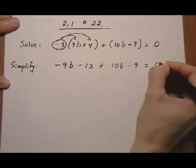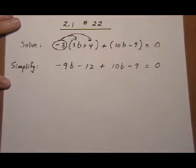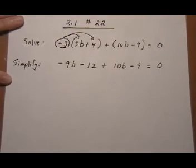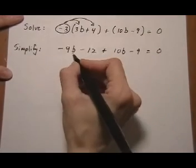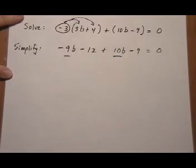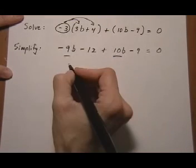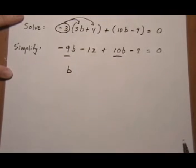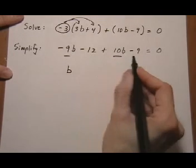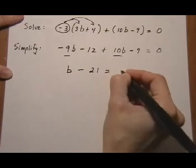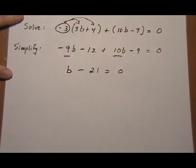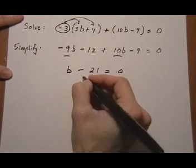So step one is distribute and clear parentheses. Combine like terms will be our next one. So we've got those two like terms, minus 9b plus 10b, and that gives us b. And these like terms, we have minus 12 minus 9 is minus 21. Bring down the equals 0. Getting b by itself, we need to do plus 21 to both sides, so b equals 21.